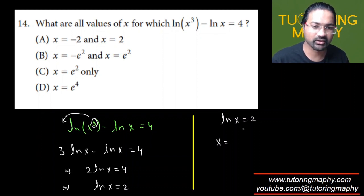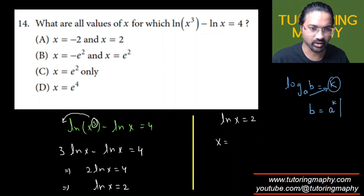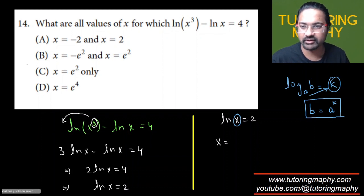Just to apprise you, if I have log of a with base b is equal to some constant k, and if you want to isolate this b, so this b remains as it is, this a is thrown over on the other side in such a way that this k comes to its power. This is how we isolate b.